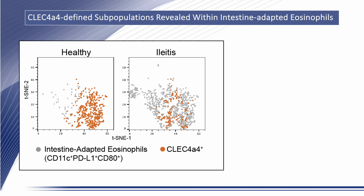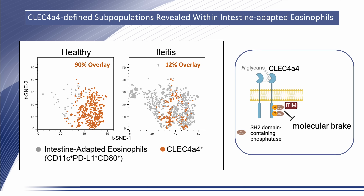We observed divergences in TSNE expression patterns when comparing intestine-adapted eosinophils from healthy versus inflamed mice, closely aligned with expression or absence of the inhibitory C-type lectin CLEC4A4. Among intestine-adapted eosinophils, CLEC4A4 expression was highly enriched in healthy mice with approximately 90% overlay, while this population was nearly absent in the context of ileitis, overlaying with only 12% of intestine-adapted eosinophils. CLEC4A4 binds glycan ligands, including N-glycans expressed on CLEC4A4 itself, transmitting a suppressive signal that in other cell types has been shown to dampen activation. Therefore, it's possible that CLEC4A4 restrains activation-induced processes such as cytolytic degranulation in this subset of eosinophils.